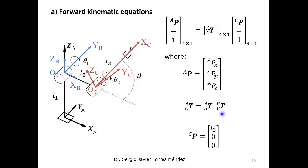In order to obtain this homogeneous transformation matrix — c with respect to a — we need to multiply two transformation matrices: b with respect to a, times c with respect to b. The last point p is with respect to the c coordinate system, and in this case the only magnitude that locates the end-effector point is the parameter L3, in the positive direction of the x axis. That is why we have L3, 0, and 0.